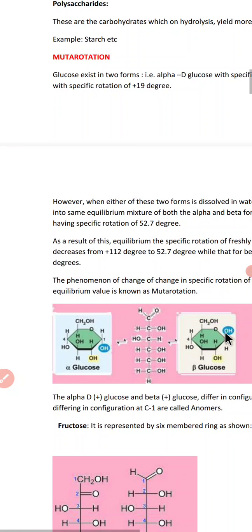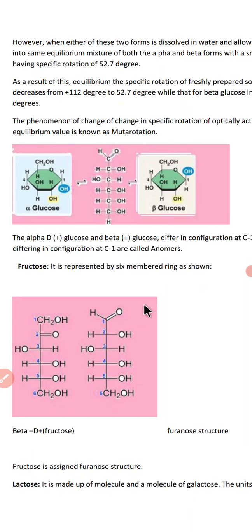In comparing alpha and beta forms, the OH at carbon one has opposite configurations — in one it is H on top with OH below, and in the other it is reversed. Fructose is represented by a six-membered ring (pyranose) or five-membered ring (furanose) structure. Carbons three through six have the same configuration in both beta-D-fructose forms, but carbon two carries a ketonic group (with CH₂OH) distinguishing it. Fructose is assigned a furanose structure.